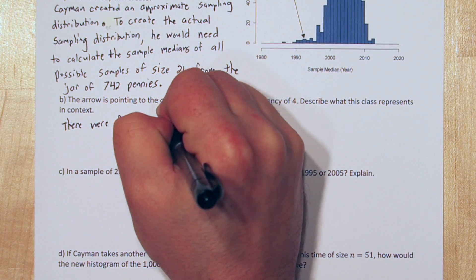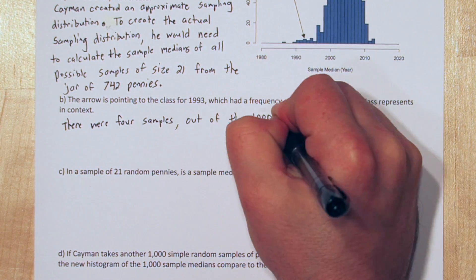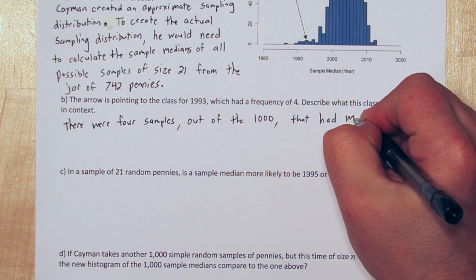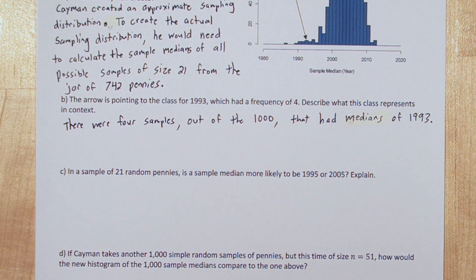The arrow pointing to the class for 1993 that has a frequency of 4 is showing that out of the 1,000 samples, there were 4 samples that had medians of 1993.